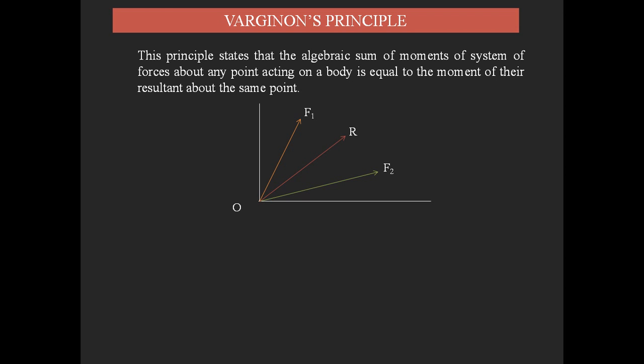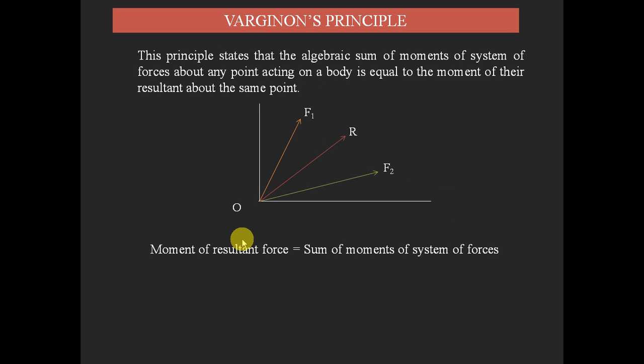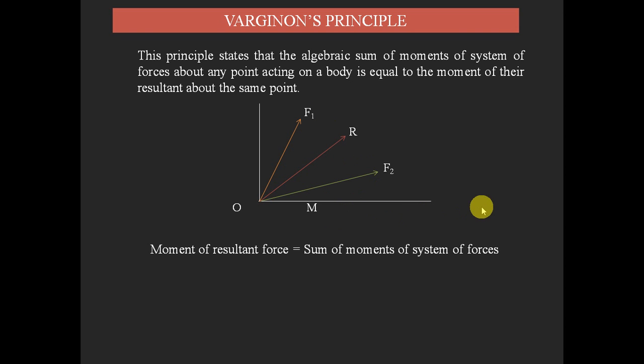Now we have to prove that the moment of the resultant force equals the sum of moments of the system of forces — that is, the sum of moments of F1 and F2. To find the moment, we need to know about which point we are finding the moment. Assume point M on a horizontal line; we are going to find the moments for each load with respect to M — the moment of F1, moment of F2, and moment of R.